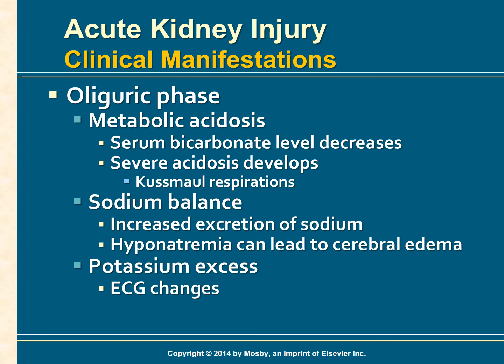In kidney failure, the kidneys cannot synthesize ammonia needed for hydrogen ion excretion, nor excrete the acid products of metabolism. Bicarbonates are used up to buffer the hydrogen ions, so the serum bicarbonate level decreases. With defective reabsorption and regeneration of bicarbonate and development of severe acidosis, the patient may develop Kussmaul respirations — rapid and deep breathing — in an effort to compensate for acidosis by increasing exhalation of carbon dioxide.